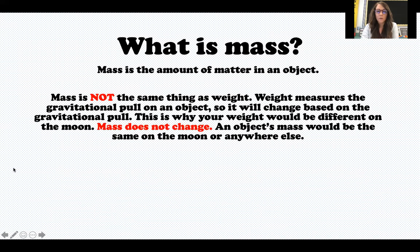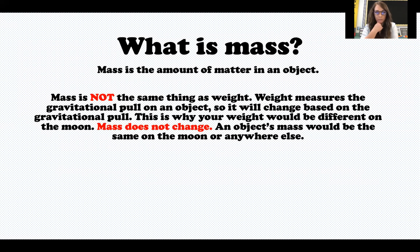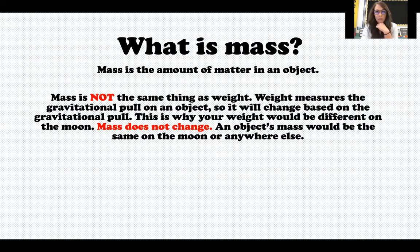Weight measures the gravitational pull on an object, so it will change based on gravitational pull. Have you ever heard that your weight would be different on the moon? On the moon you might only weigh 32 pounds because the gravitational pull on the moon is different than it is on Earth. But mass doesn't change — an object's mass would be the same on the moon or anywhere else, because it's a measure of the amount of matter in an object, and that doesn't change whether you're on Earth, the moon, Jupiter, or Mars.